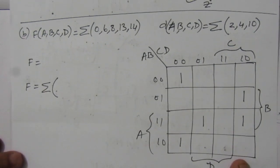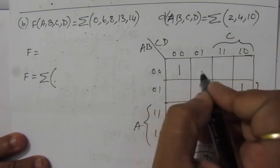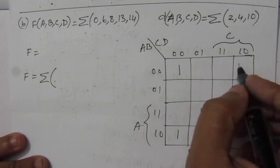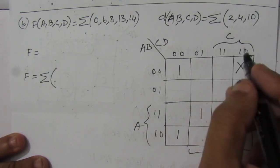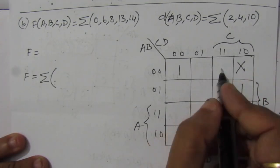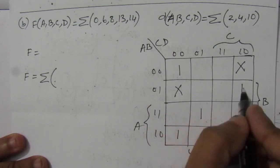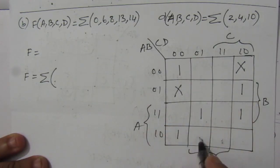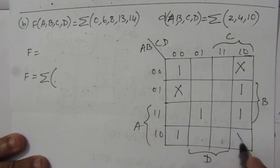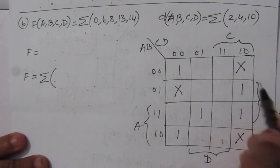We have to fill up this map with don't care conditions 2, 4, and 10. Position 0, 1, 2 — put a don't care here. Then we have 3, 4, 5, 6, 7, 8, 9, 10. So we have placed all the don't care conditions.